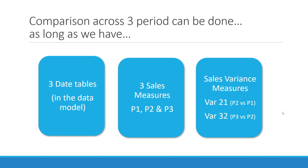The only thing we need to make sure is we have three date tables, which we have set up in our data model earlier. Then we need three sales measures — period one, period two, and period three. We also need measures for various sales variances: for example, variance 2-1 compares the difference between sales from period two and period one, and variance 3-2 compares the difference between period three and period two. Once you have set up all these measures, just stack up your waterfall and create your table.